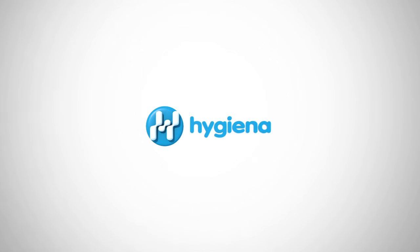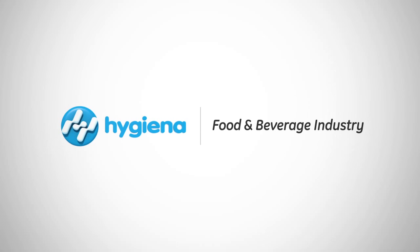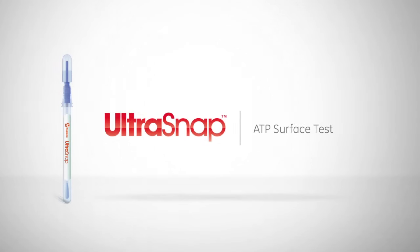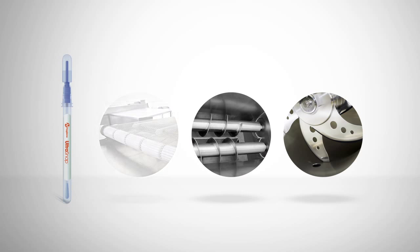This video will feature the benefits and proper use of UltraSnap, Hygiena's best-selling ATP sanitation monitoring test. UltraSnap is a user-friendly ATP test used for assessing the cleanliness of food contact surfaces and other processing equipment after cleaning.